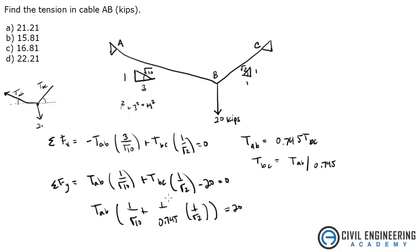And solving for all of that, so basically it's 20 divided by all of this, and that will give you tension AB. Plug that into your calculator, and I get tension AB of 15.81, which is answer B.